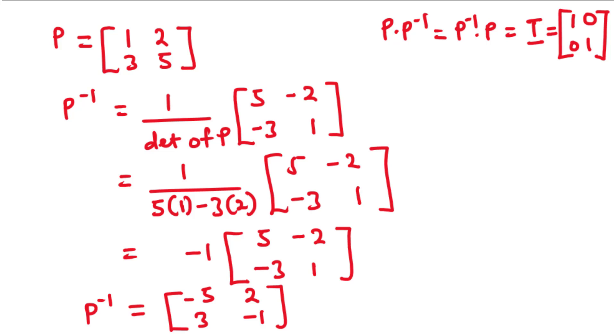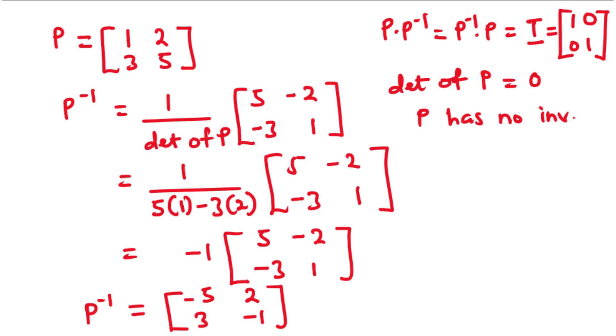Notice also that if the determinant of a square matrix is equal to 0, then the matrix is called a singular matrix, and it has no inverse. However, if the determinant of a square matrix is not equal to 0, then the matrix is called a non-singular matrix, and the matrix has an inverse.